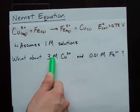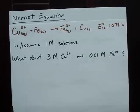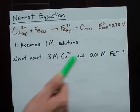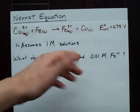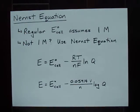What if we had 3 moles per liter of copper 2 and 0.01 moles per liter of iron 2? Pretty good question. Different concentrations use the Nernst equation.